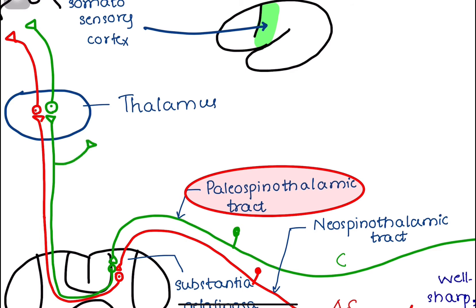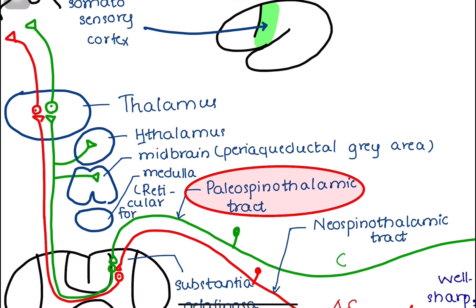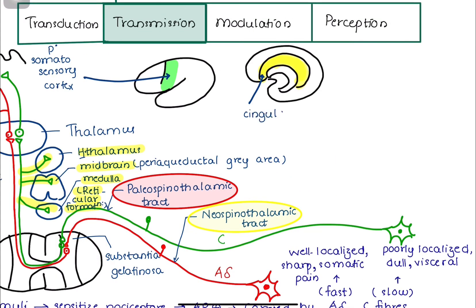One, the hypothalamus. Two, the periaqueductal gray matter of the midbrain. And three, the reticular nuclei of the medulla. The neospinothalamic tract passes all the way to the thalamus without interruption. From thalamus, the signals are transmitted to other areas of the brain as well, such as cerebral cortex and cingulate gyrus.